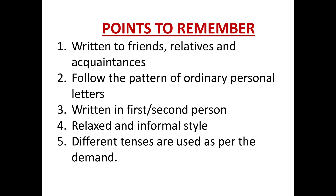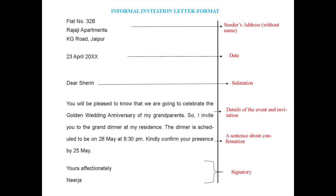Let us see what are the points to remember when you write an informal invitation. An informal invitation letter is written to friends, relatives, and acquaintances — not to any dignitaries, not to VIPs, or not to a group of people. It follows the pattern of an ordinary personal letter. It is written in first person, and the style is very informal and relaxed. No need for any artificial words or extra words of courtesy. Different tenses are used as per the demand.